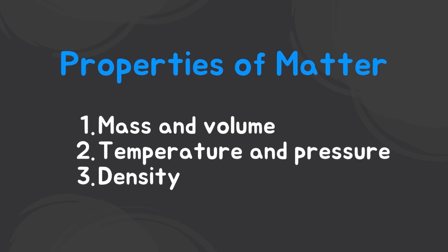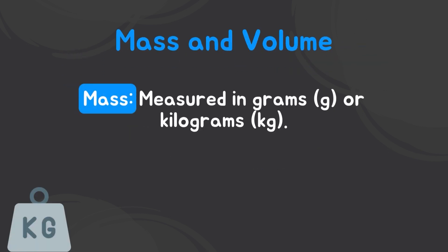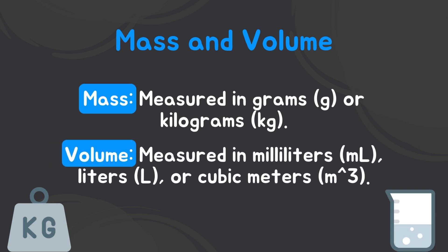Now let's talk about the properties of matter, because it is very important in how we understand chemical reactions. There are many properties of matter. Let us cover some of them. Mass and volume: mass is measured in grams or kilograms. Volume is how much space an object takes up. Volume can be measured in millimeters, liters, or cubic meters.